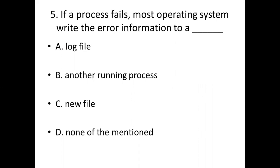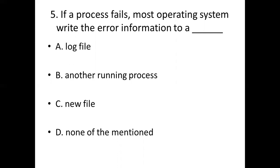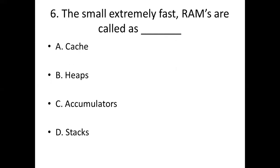Fifth bit. If a process fails, most operating systems write the error information to a dash. Option A, log file. Option B, another running process. Option C, new file. Option D, none of the mentioned. Answer: Option A, log file.